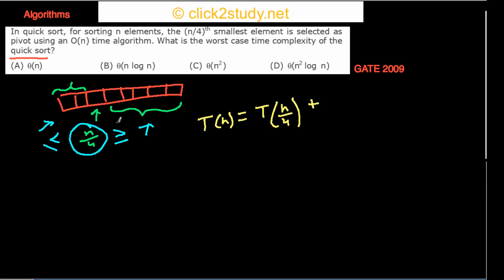Plus you have to sort the elements to the right of the pivot, which is 3n/4 — because when you put n/4 on the left side you are left with 3n/4 elements on the right side, so that term is T(3n/4). And when you partition, you use an O(n) time algorithm, so you also add a cn term.